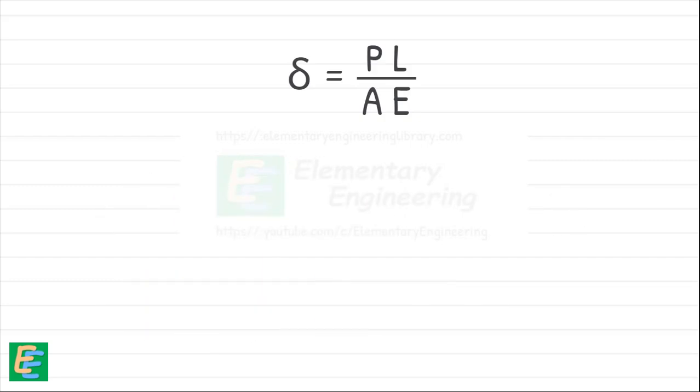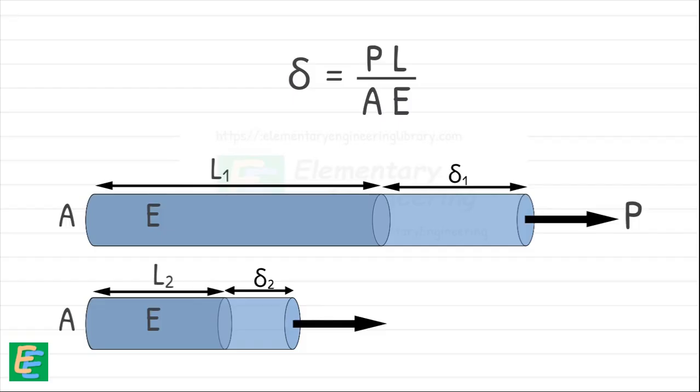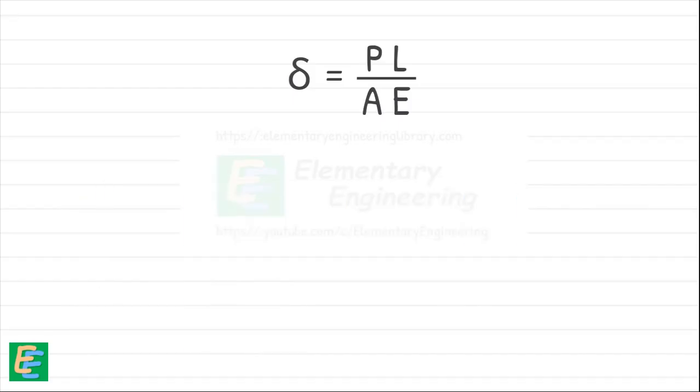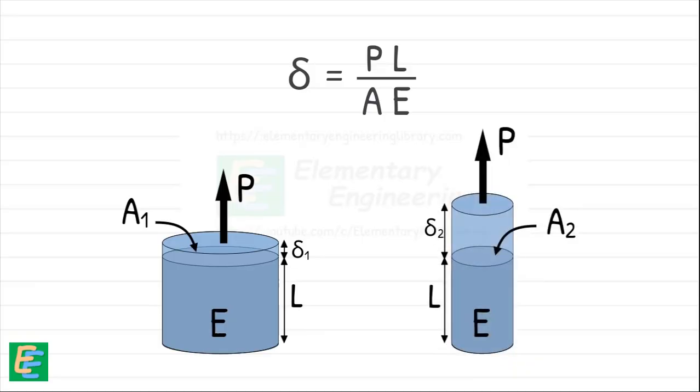It's also directly proportional to the original length. A longer bar will stretch more than the shorter one under the same force. But it's inversely proportional to the cross-sectional area. That means a thicker bar will deform less because the force is spread over a larger area.